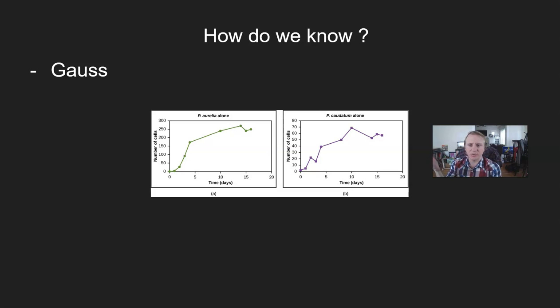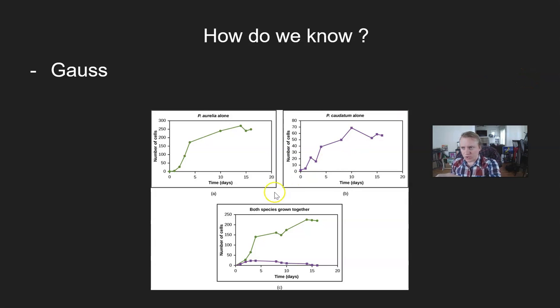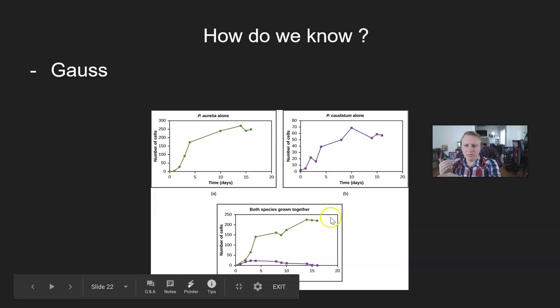One of these was done by this gentleman named Gauss, who grew different species of paramecia in different environments. And you can see the two alone that they do quite well. If you just grow them by themselves, you give them nutrients, you give them whatever they need, they grow just fine. But then if you try to grow them together, you'll notice that one of them, the population does well and the other one dies off.